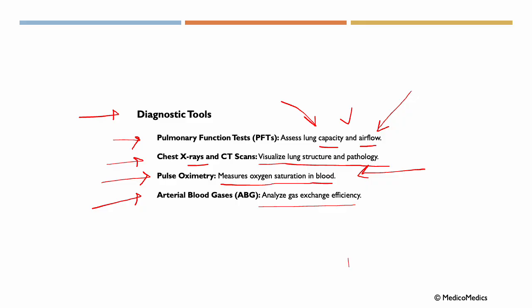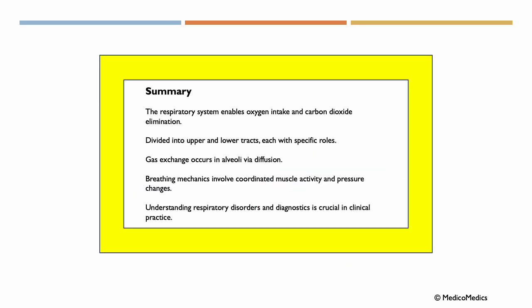Further, if we want to know if gas exchange is efficient, we do arterial blood gases. In summary, the respiratory system enables oxygen intake and carbon dioxide elimination. The respiratory system is divided into upper and lower tracts, each with specific roles. Gas exchange occurs in alveoli via diffusion. Breathing mechanics involve coordinated muscle activity and pressure changes. Understanding respiratory disorders and diagnostics is indeed crucial in clinical practice.